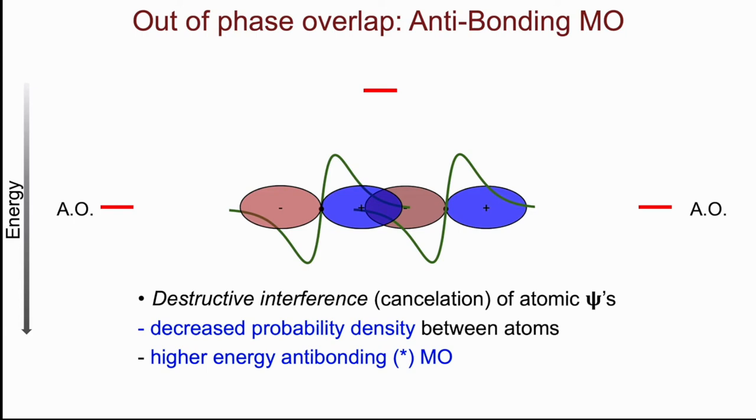So this destructive interference, the cancellation of the atomic wave functions, decreases the probability density between the atoms and gives me this higher energy anti-bonding, where the designation is typically a star. So this would be a sigma star molecular orbital.